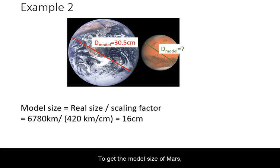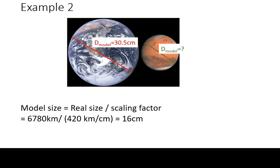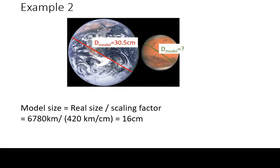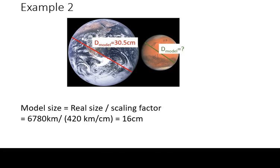To get the model size of Mars, we divide the real size of Mars by the scaling factor. 6,780 km divided by 420 km per cm gives us a model size of 16 cm.